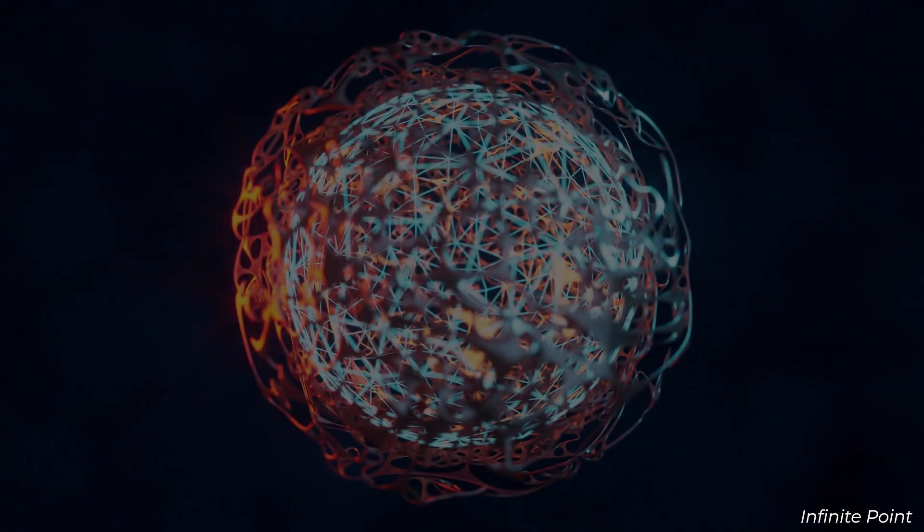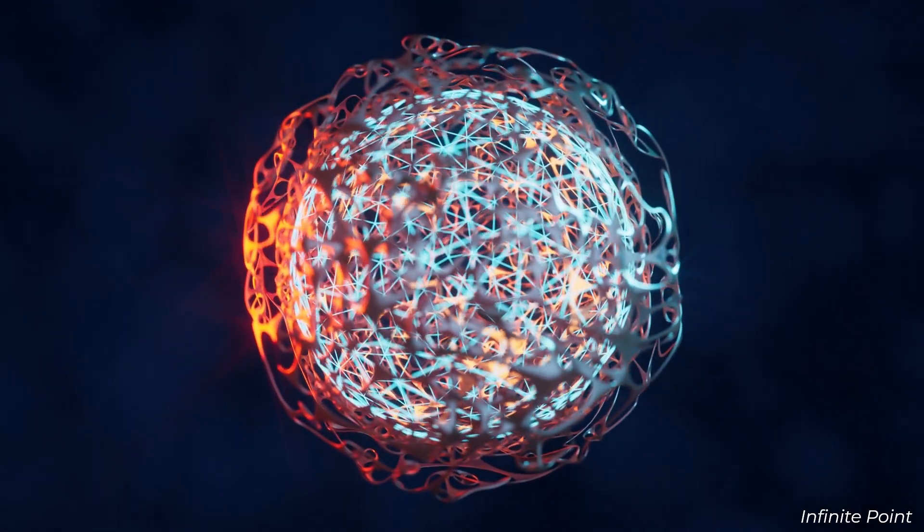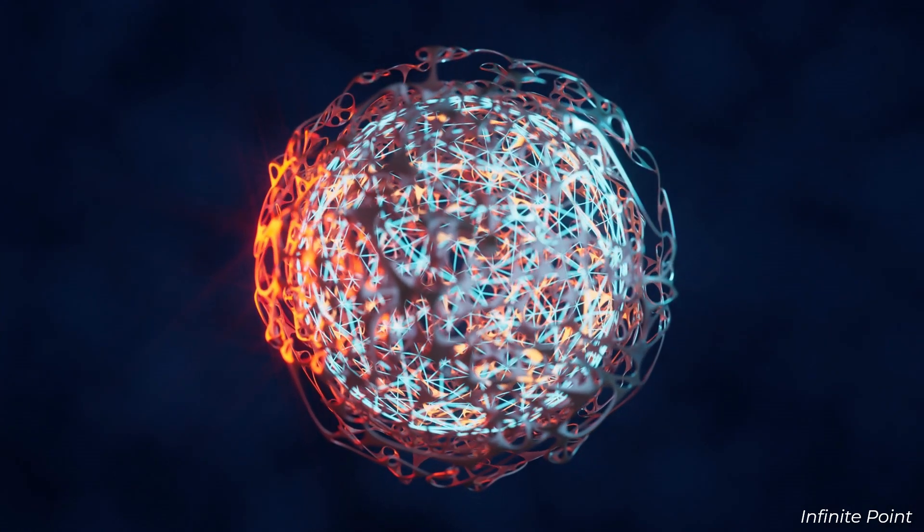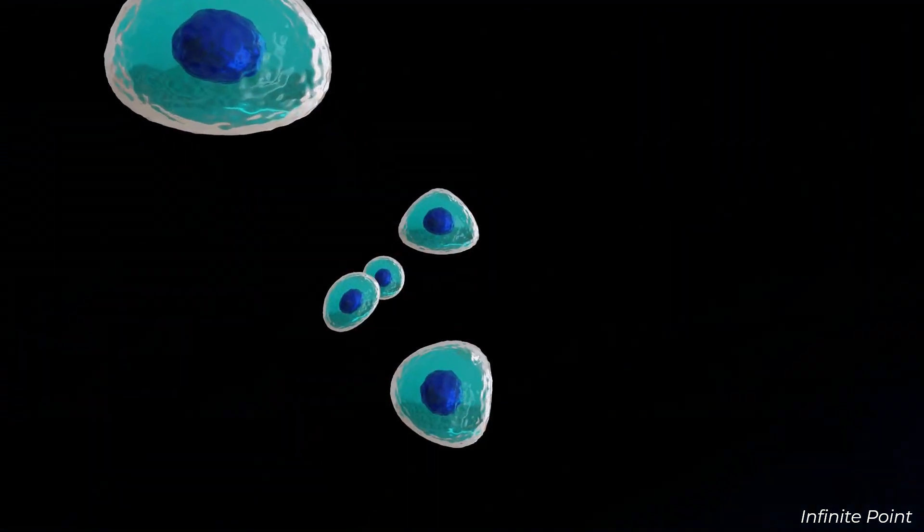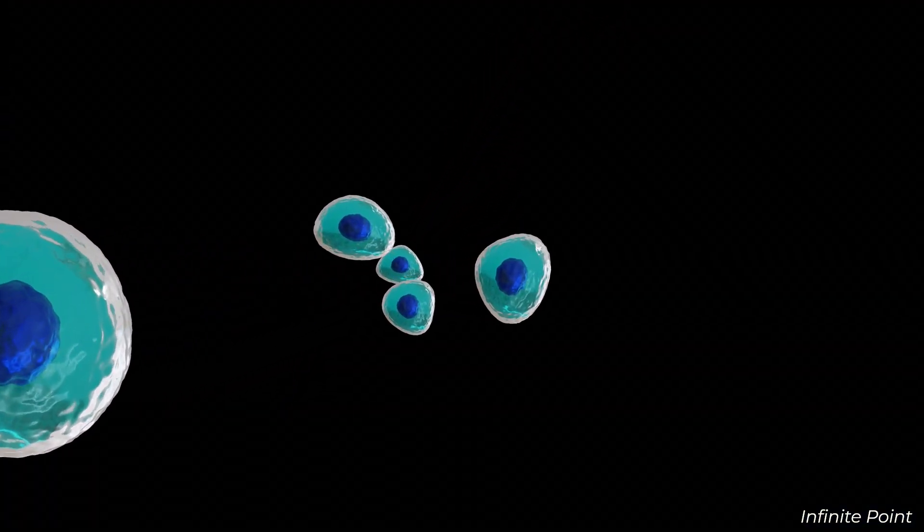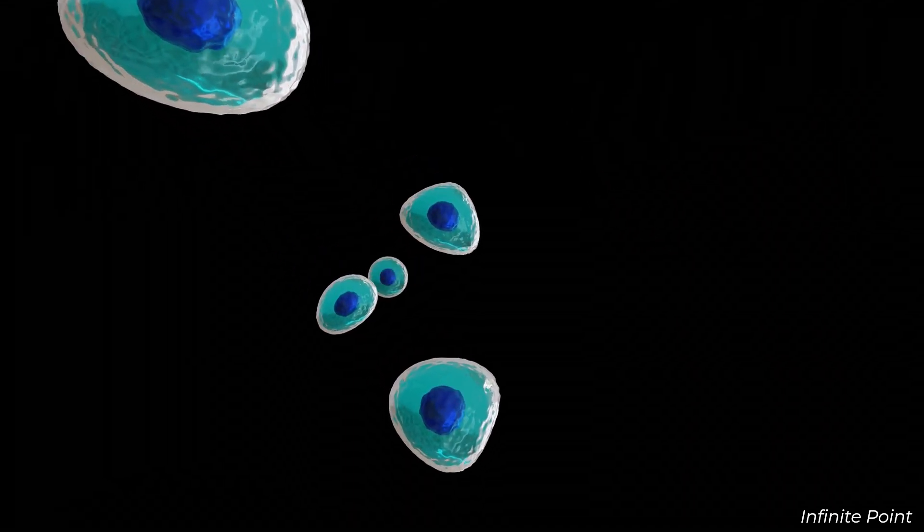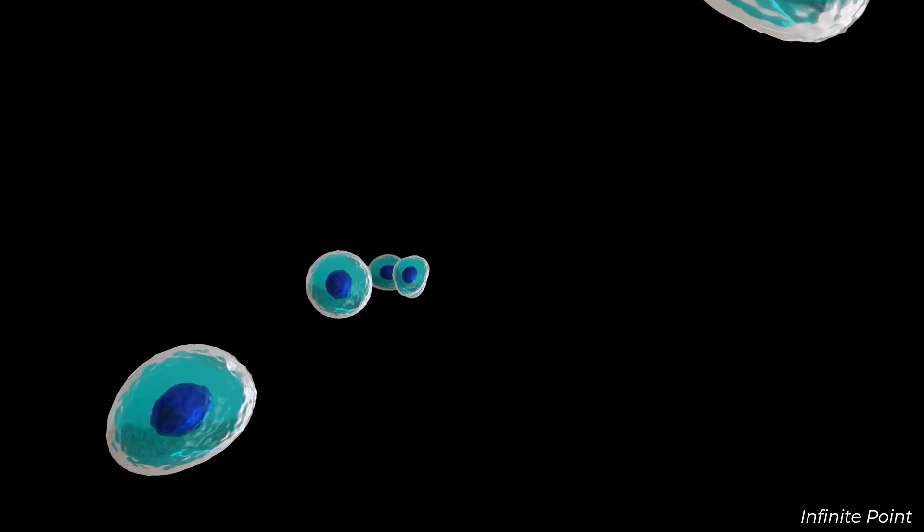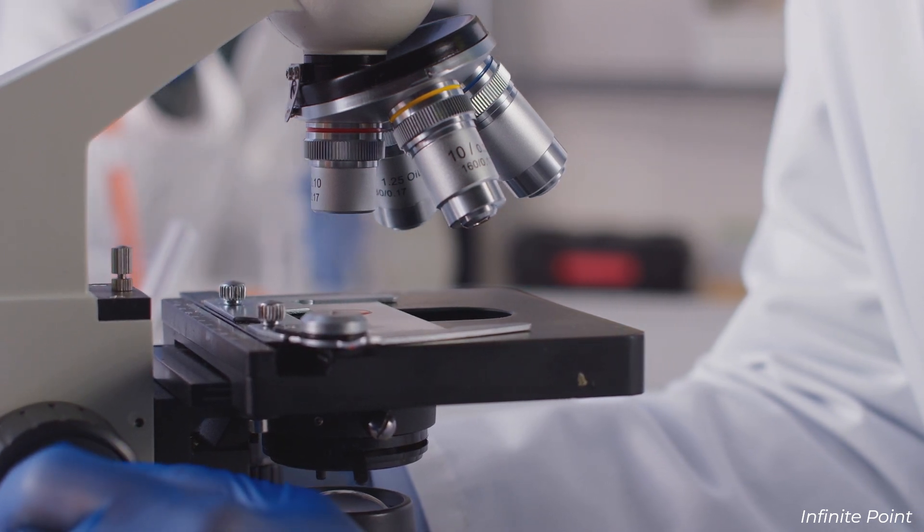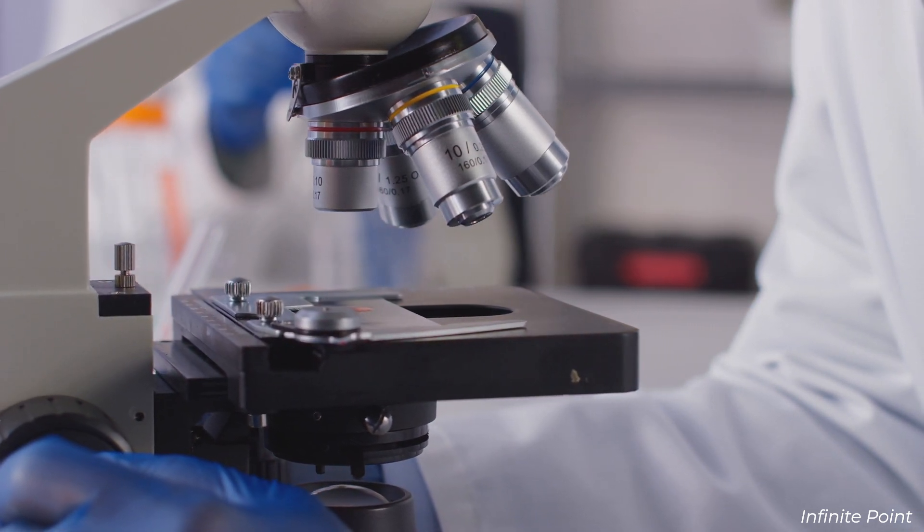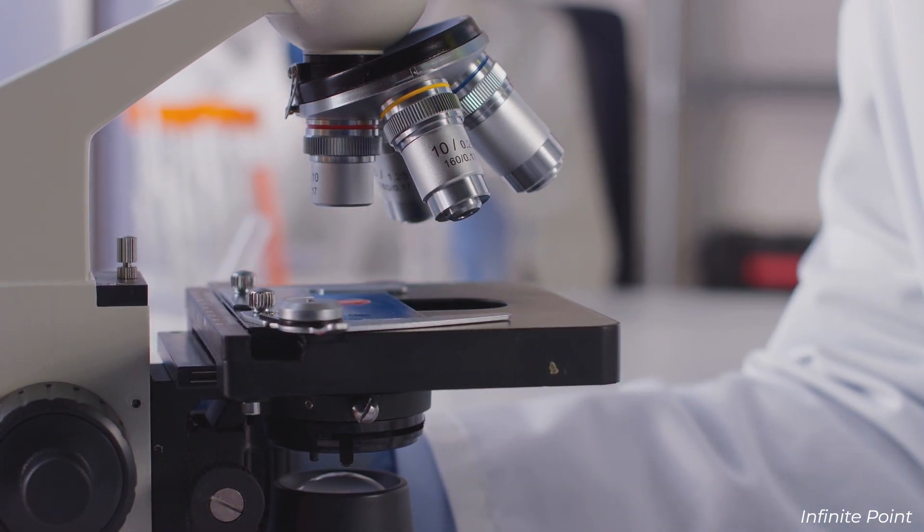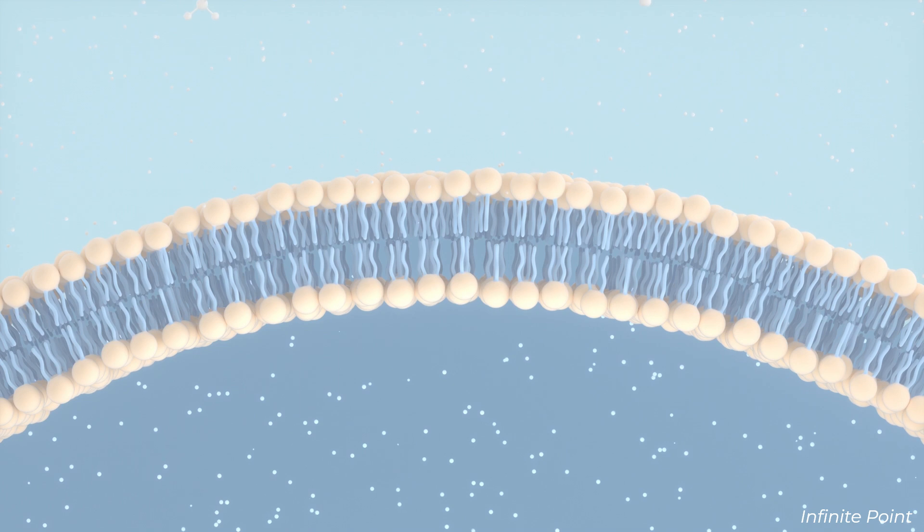The transition from simple molecules to protocells marked a significant step in the evolution of life. Protocells are primitive cell-like structures that can encapsulate organic molecules and sustain basic chemical reactions. Laboratory experiments have shown that lipid molecules can spontaneously form bilayer membranes in water, mimicking the structure of modern cell membranes.